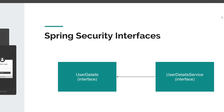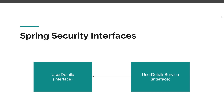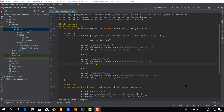So we have this UserDetailsService which finds a UserDetails entity by its username, and these two things are interfaces, which means we have to provide an implementation for both of them. This is what we're going to do in today's episode - enough talking, let's see some code.